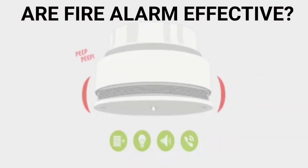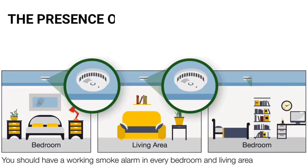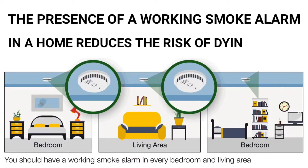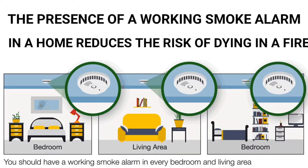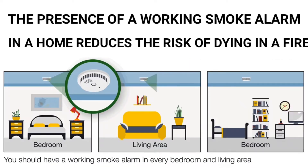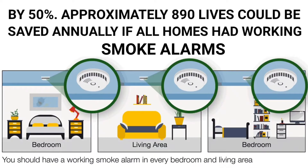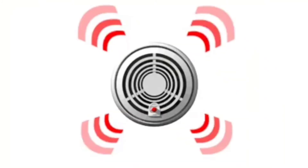Are fire alarms effective? The presence of a working smoke alarm in a home reduces the risk of dying in a fire by 50%. Approximately 890 lives could be saved annually if all homes had working smoke alarms.